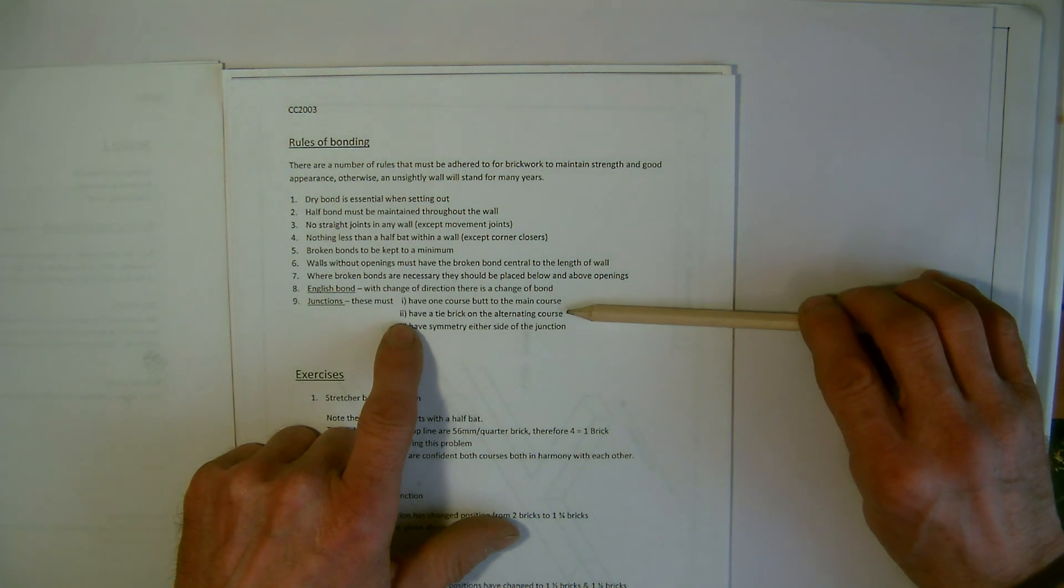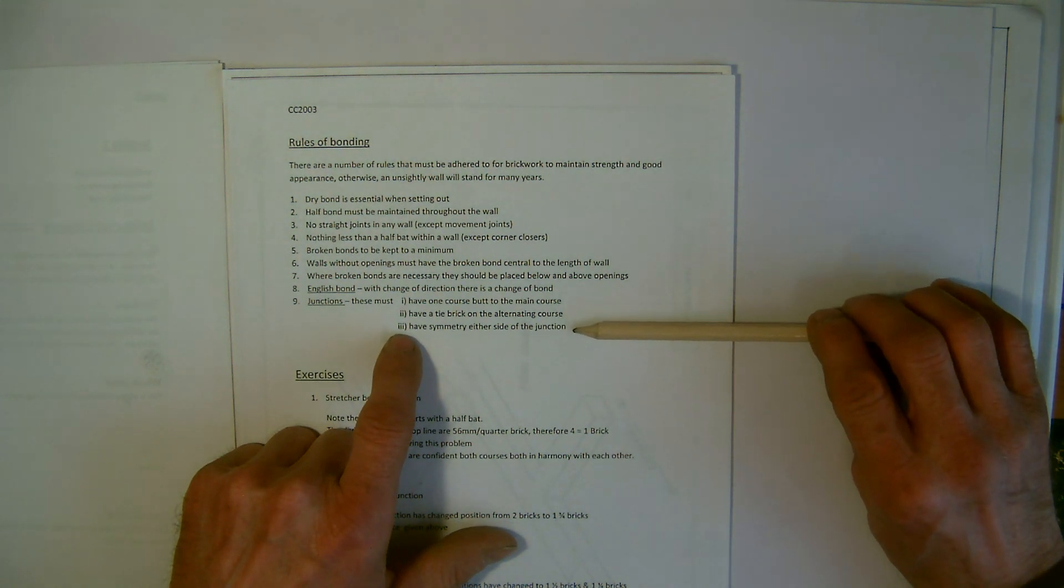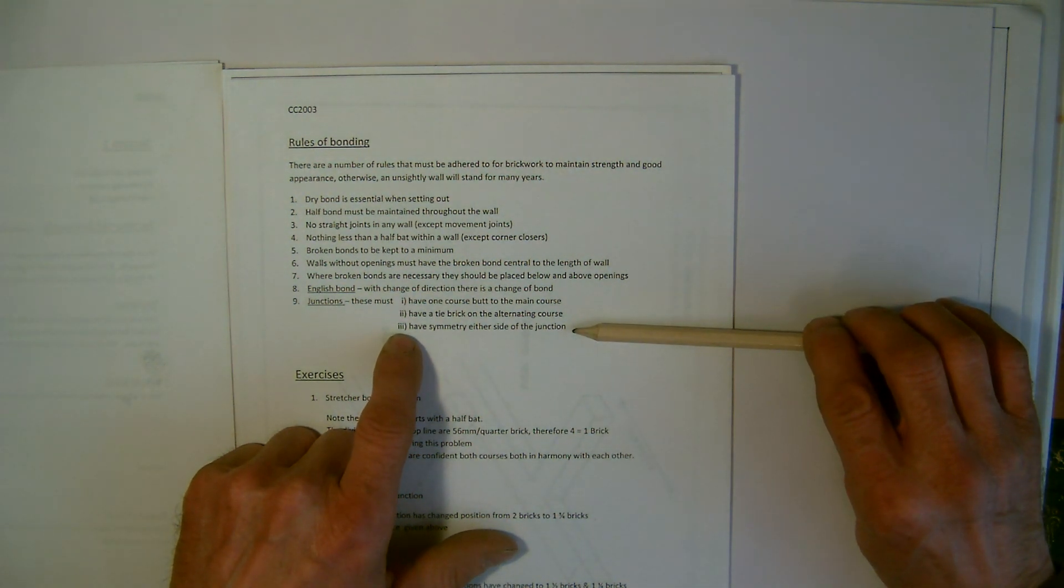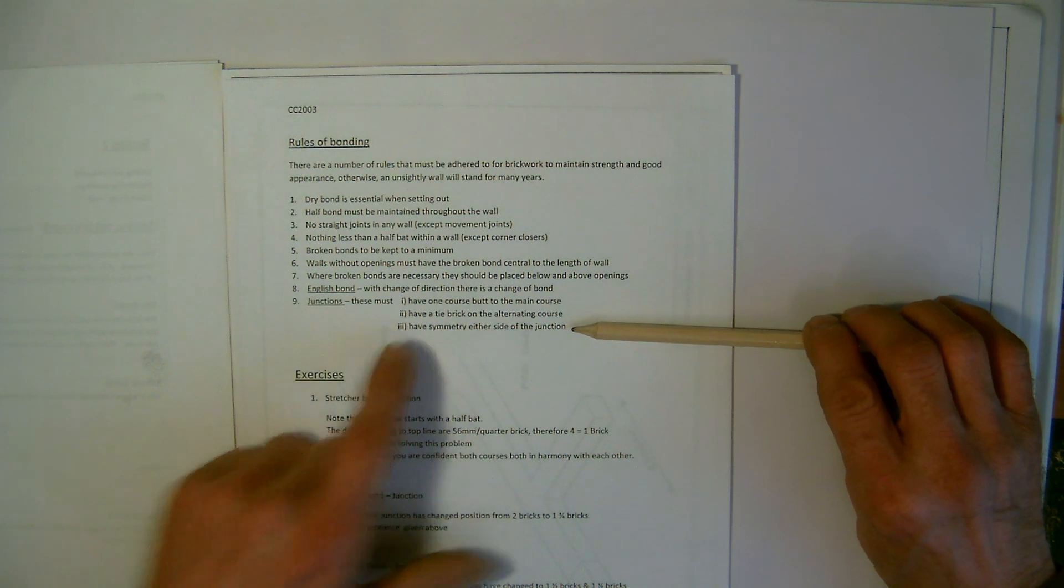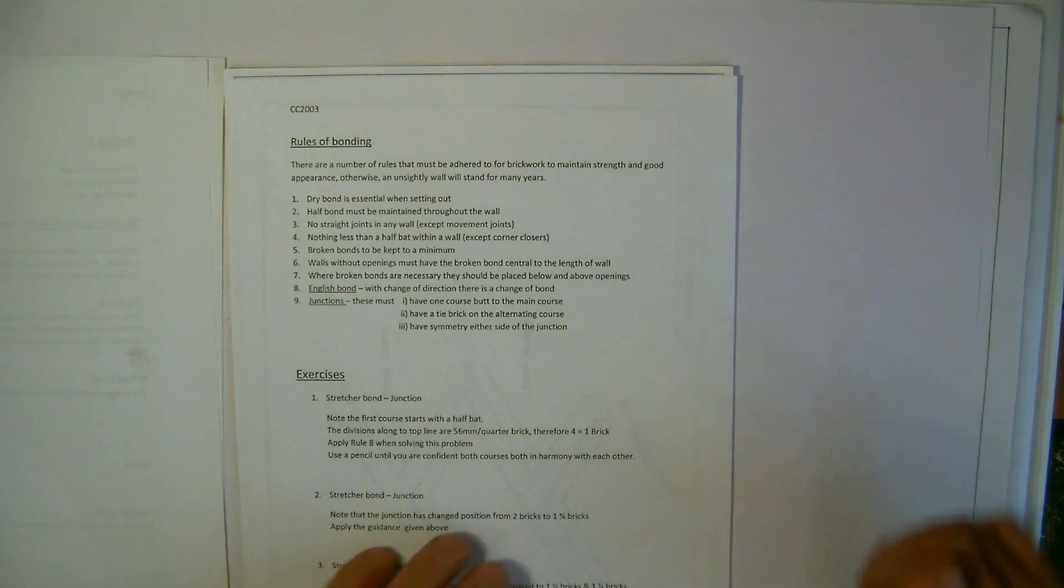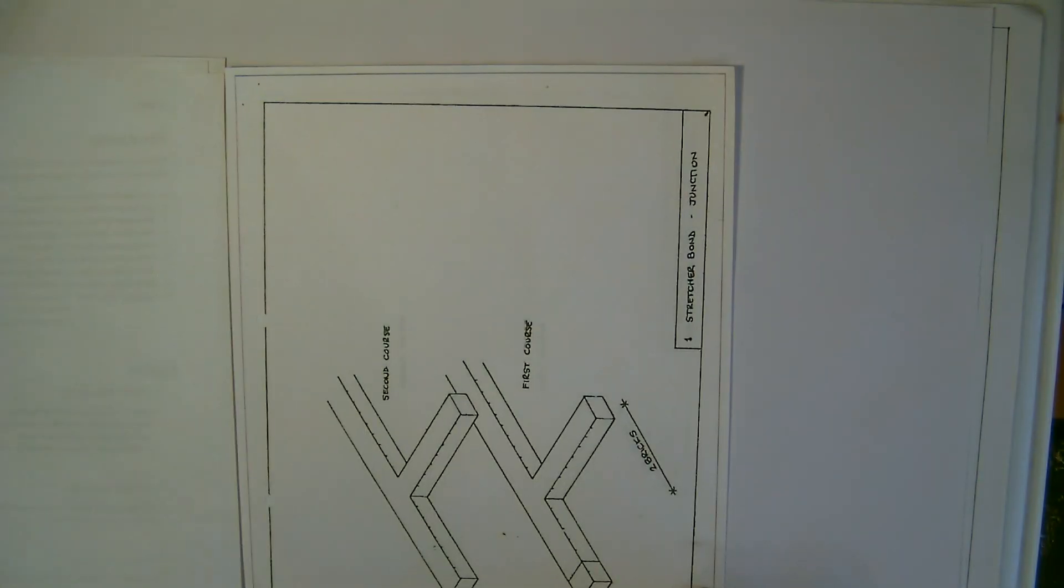Two is they must have a tie brick on the alternating course. And the third rule for working out junctions and piers, this is really as well, is that there must be symmetry either side of the junction. So if we just turn to what would be the first exercise that we have in here.